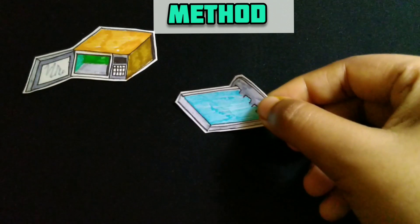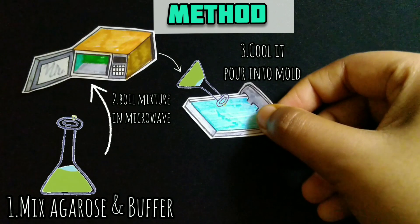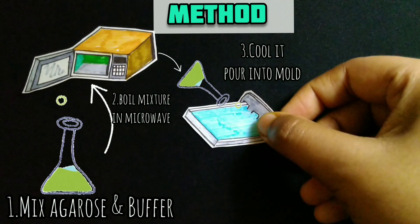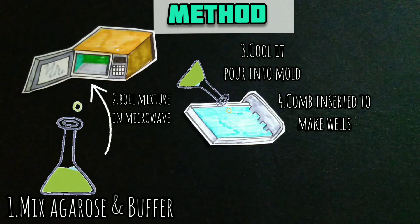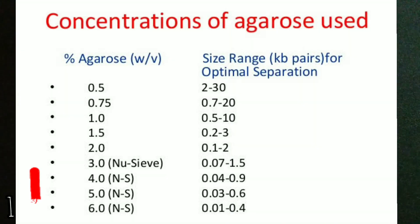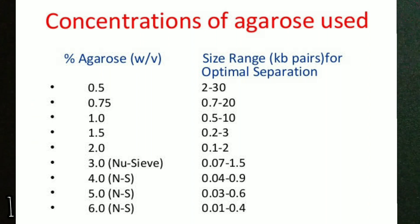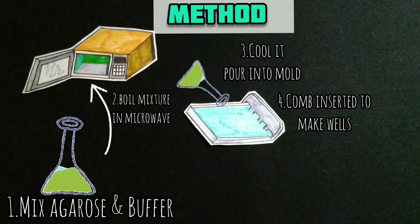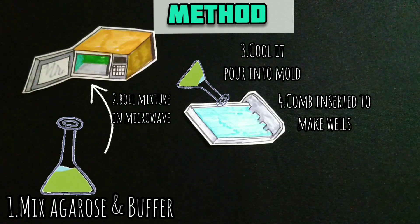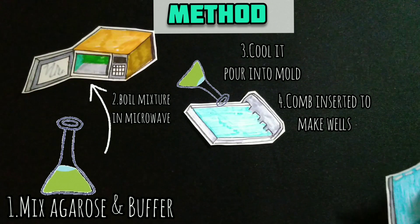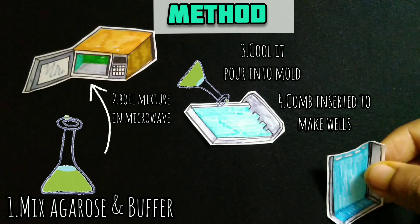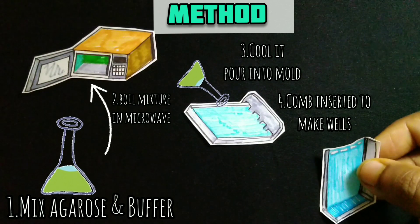Prepare a solution of agarose in electrophoresis buffer at an appropriate concentration. The mobility of nucleic acids in agarose gel is influenced by molecular size and molecular conformation. Agarose concentrations of 0.3–2.0% are most effective for nucleic acid separation. Loosely plug the conical flask and heat the slurry in a boiling water bath until the agarose dissolves, then cool to 55°C.